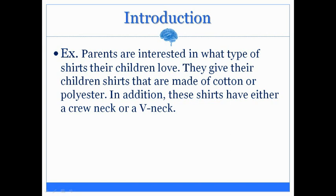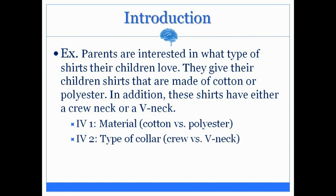It's a little tricky here — I actually gave you two independent variables in this one experiment. The two factors being manipulated include material as well as the type of collar. The first independent variable is the material: parents either gave their children a cotton shirt or a polyester shirt. The second manipulation is the type of collar: either the crew neck or the v-neck. Two manipulations, two independent variables — and that is completely fine. Actually, many experiments have more than one independent variable.